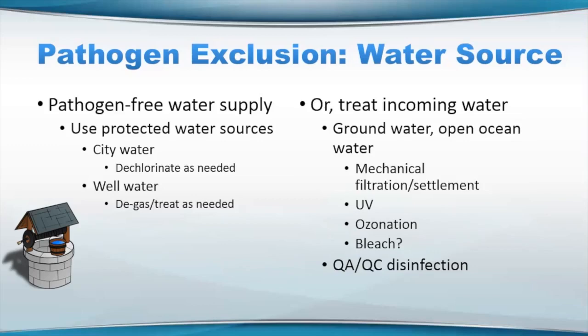One way to try to clean up water is to use some sort of treatment — typically mechanical filtration or settlement. Some people will use UV sterilization depending on the pathogens they're trying to control, ozonation, and bleaching and neutralization. Of course, if you're using any of these, you really do want to have some sort of periodic quality assurance and quality control — a QA/QC way to monitor your disinfection to make sure that it is keeping up with your inflow of water. The real ultimate goal is to use only a protected source or a pathogen-free source, specific for the organisms that may affect your animals.